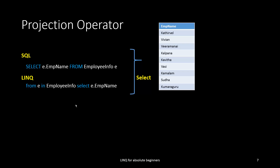Let's come to the implementation. We are going to use the projection operator here. Projection operator is nothing but selection from a particular column — we are using single column selection. Normally we use SELECT column name FROM table name with an alias name. This is a simple SQL statement for selecting a single column from a table. In LINQ, the operators should be in lowercase — this is camel case.